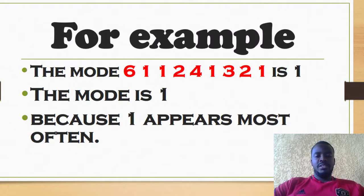For example, the mode of 6, 1, 2, 4, 1, 3, 2, 1 is 1. This is simply because 1 appears the most.